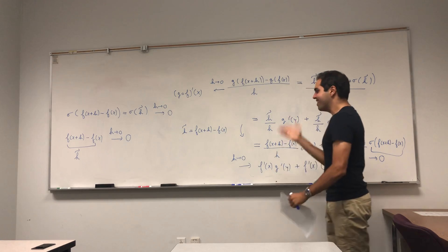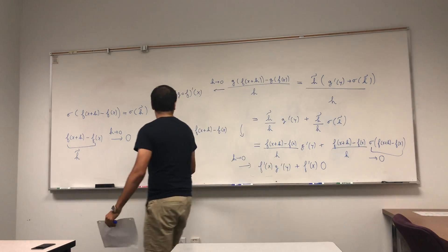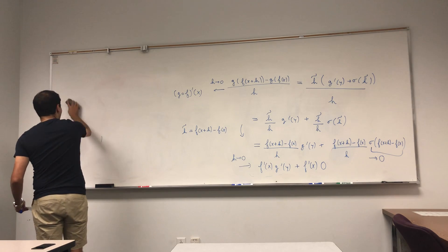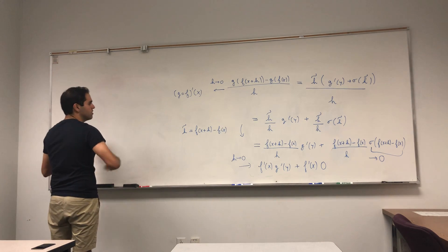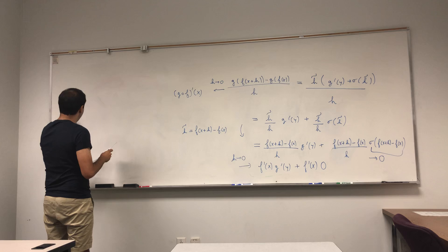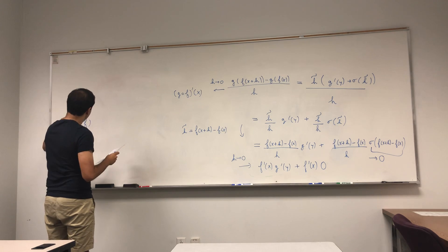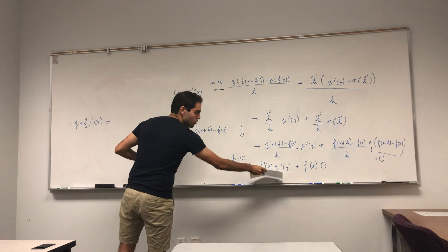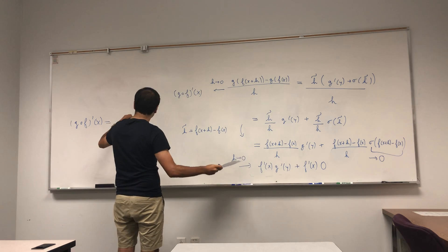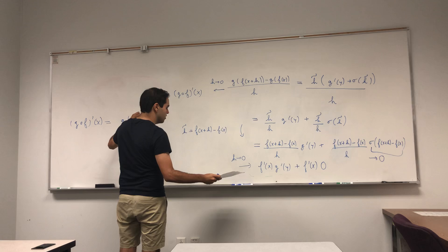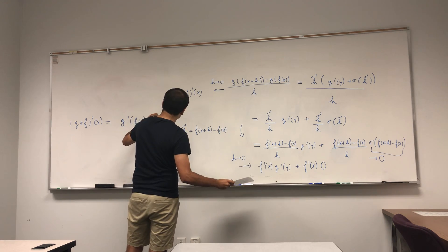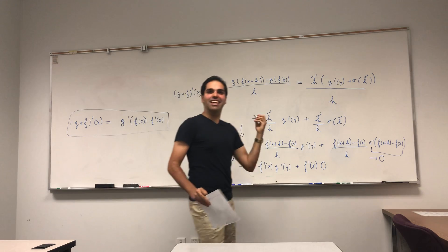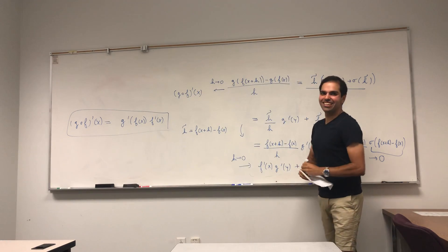So indeed, after this big calculation, that second term is f prime of x times zero, which is zero. What you're left with is simply: g composed with f prime of x equals g prime of f of x times f prime of x — which is, ladies and gentlemen, the Chen Lu!